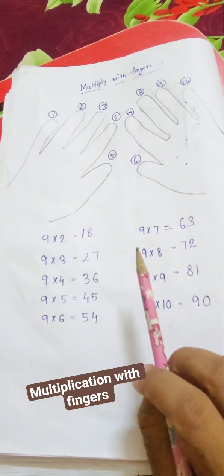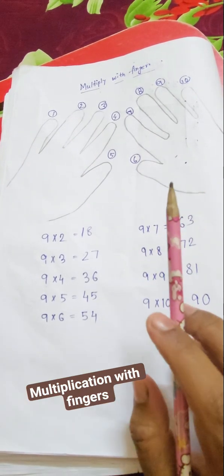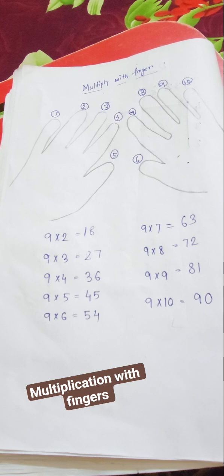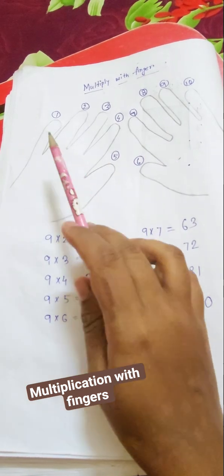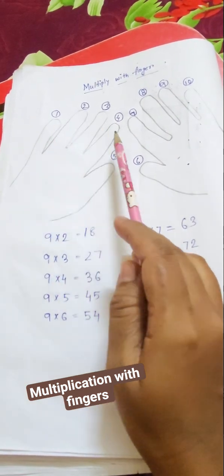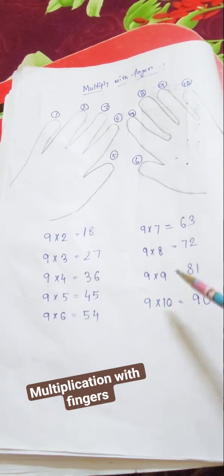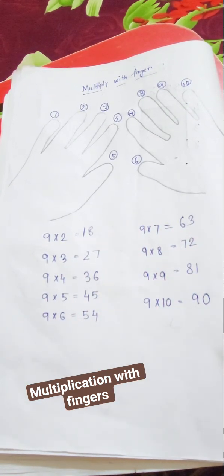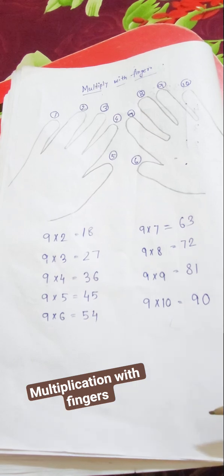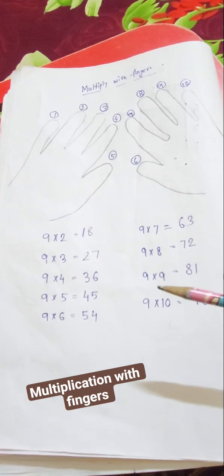Hello everyone, today in this video I will show you how to multiply with fingers. I have numbered the fingers 1, 2, 3, 4, 5, 6, 7, 8, 9, 10. Here we have to multiply 9 with the numbers which I have already done, and I'm going to explain how I did this in a simple way.